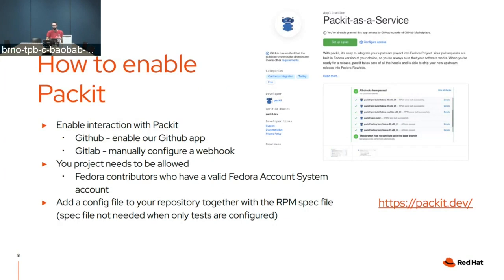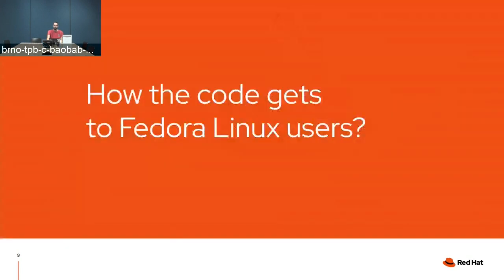There is one step before actually using Packit: we need to allow your project so that Packit can consume events from it, for security purposes. We want to bind your GitHub project with your Fedora presence, so we require that you have an account in the Fedora Account System. Just create it, link it with your GitHub account, and we have an automated process to allow this. Then you can start right away — just write one YAML config, put it in your upstream project, figure out an RPM spec file, and you can get RPM builds for pull requests, commits, or releases.